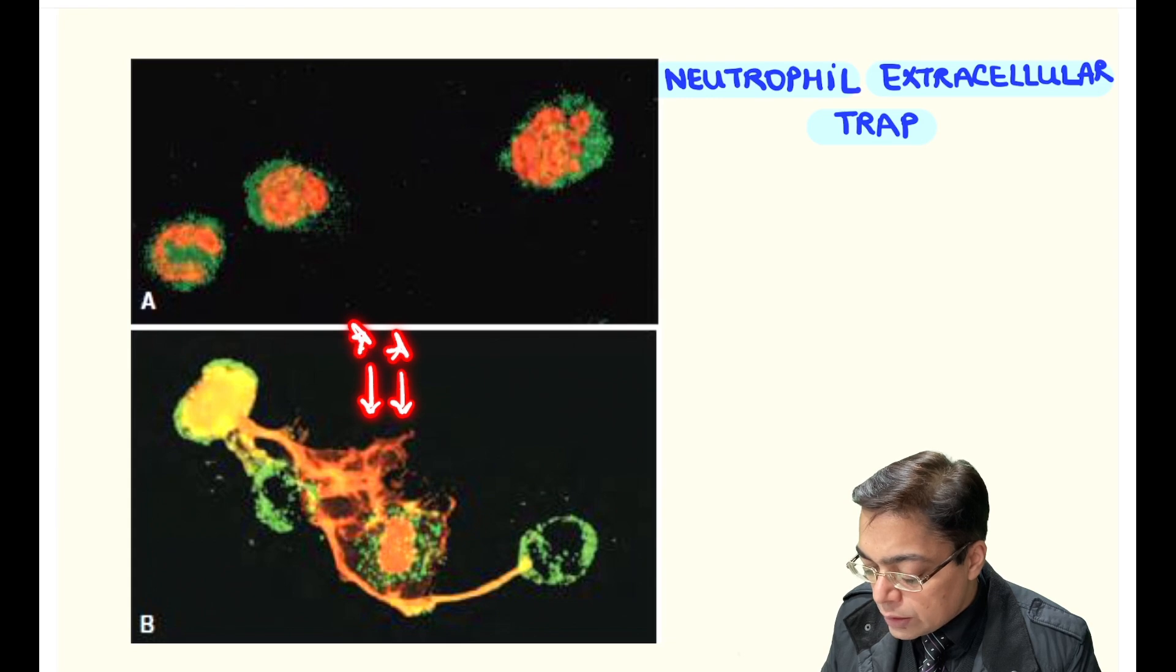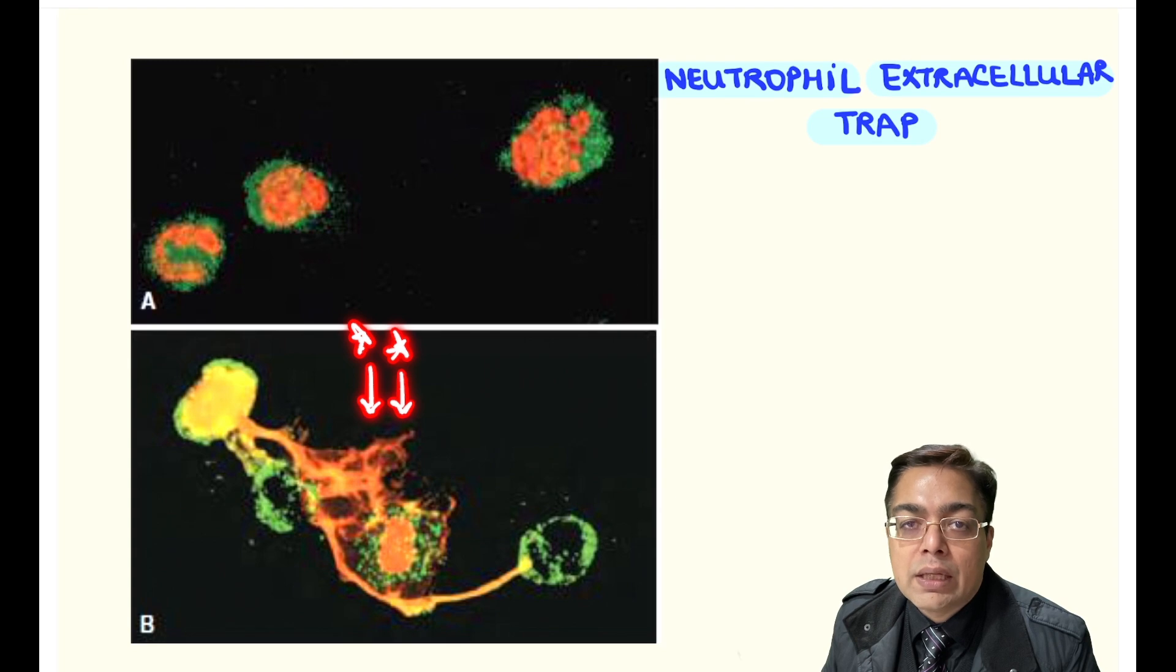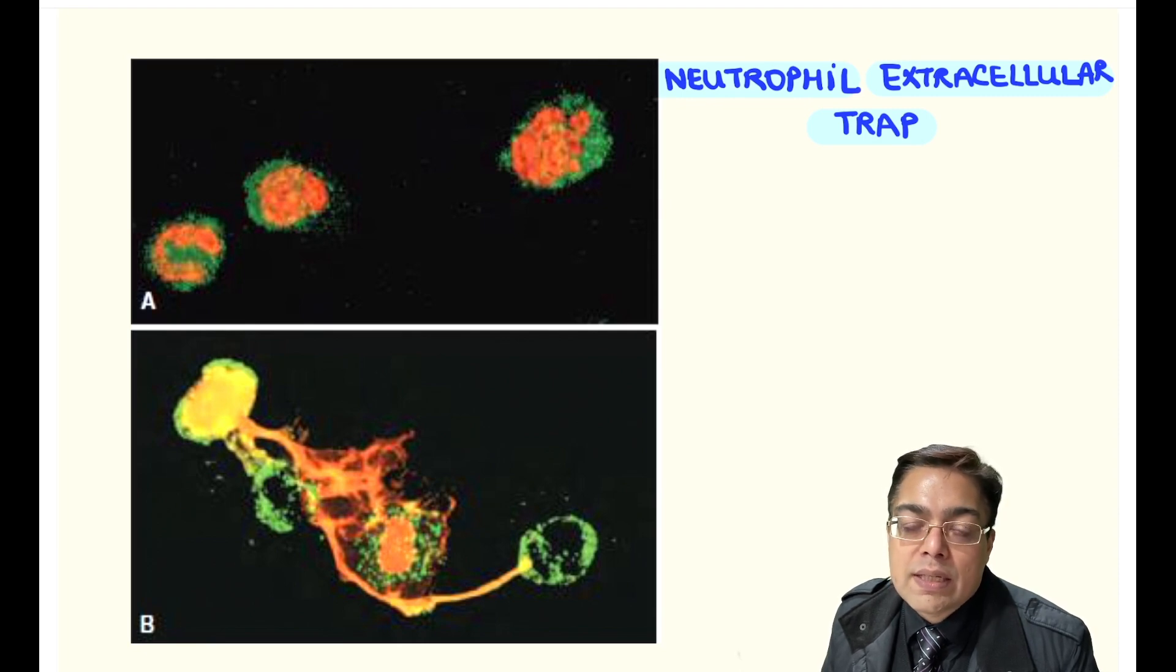Once the bacteria are entrapped, they are subsequently killed over here using the DNA material of the cell. The bad point is that the bacteria is killed but the cell is unable to survive, but this is considered an example of a beneficial suicide.